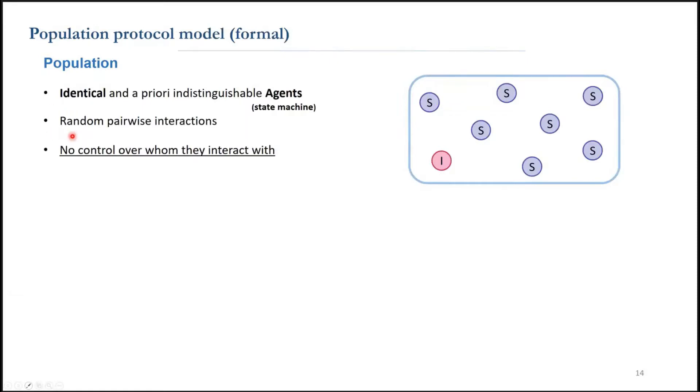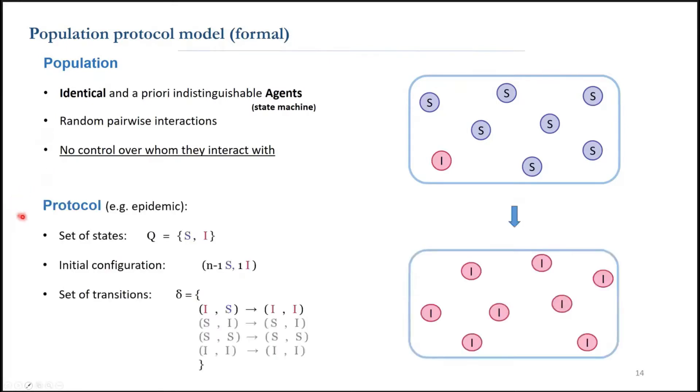A protocol defines the rules for the agents interactions. It consists of a set of states that shows how much memory each agent must have, and also specifies a set of valid initial configurations, and finally a set of interactions.